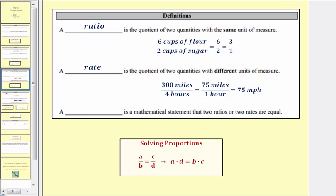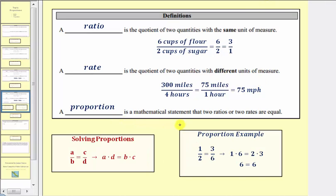And then finally, a proportion is a mathematical statement that two ratios or rates are equal. So a proportion is always in this form here. An important property about proportions is that the cross products are always equal. Meaning, a times d is always equal to b times c.